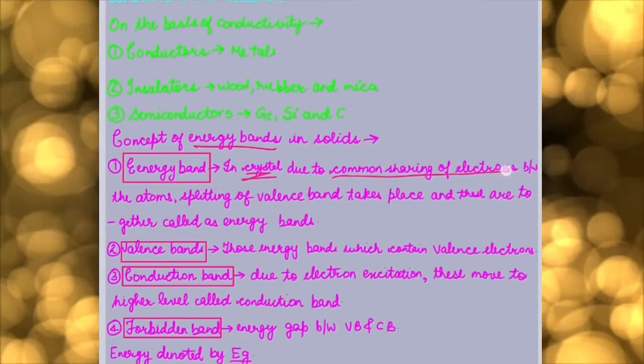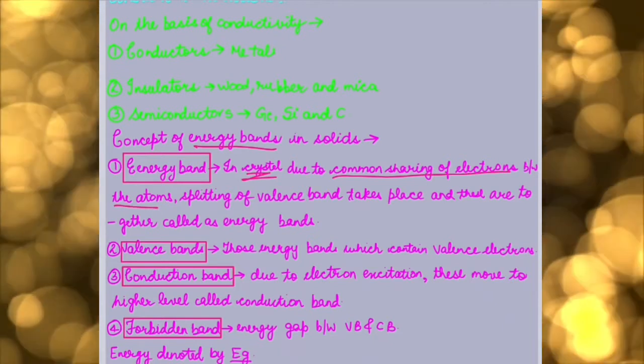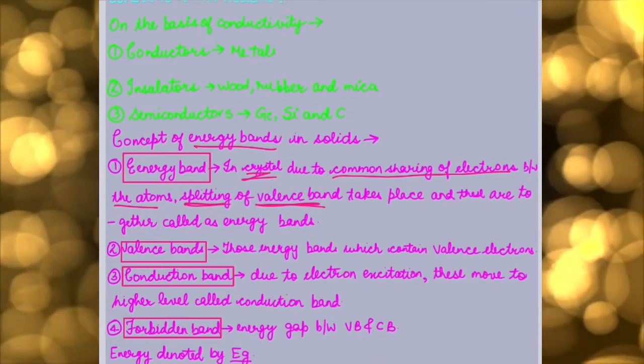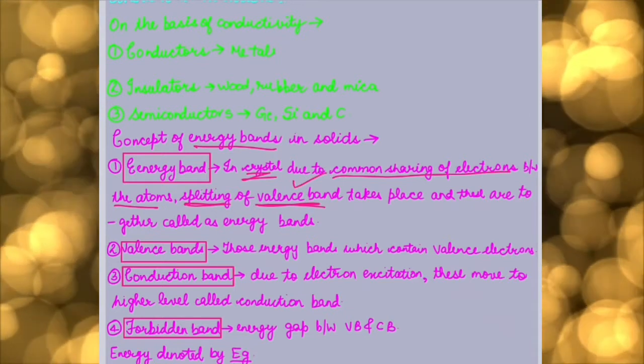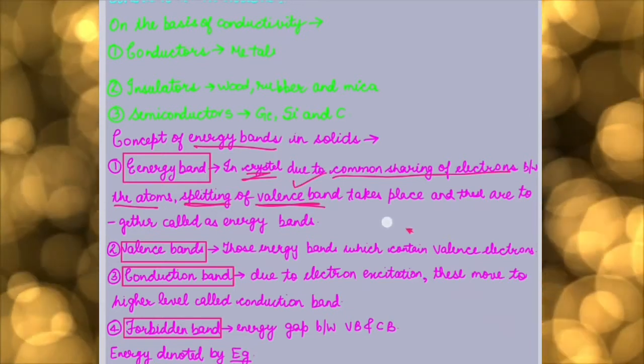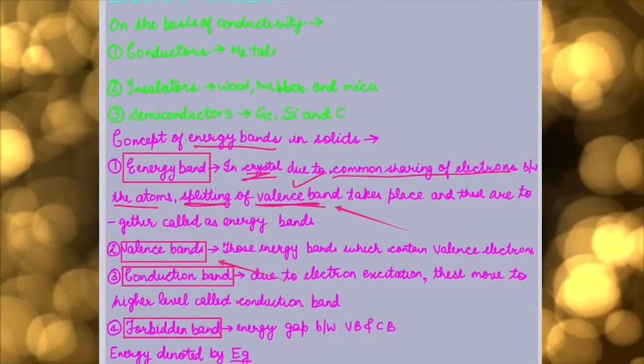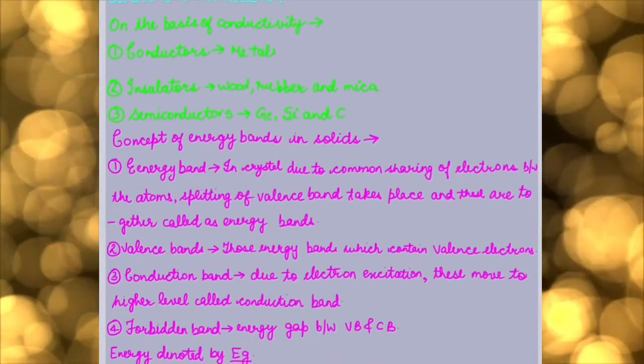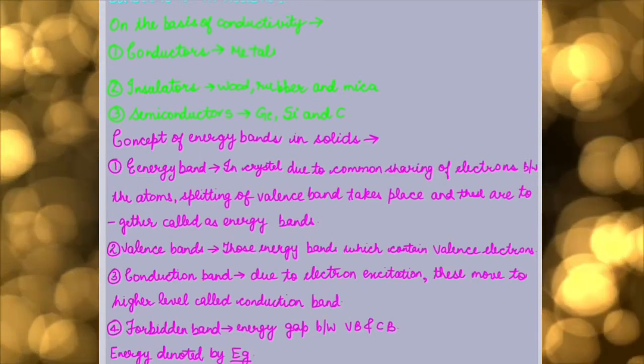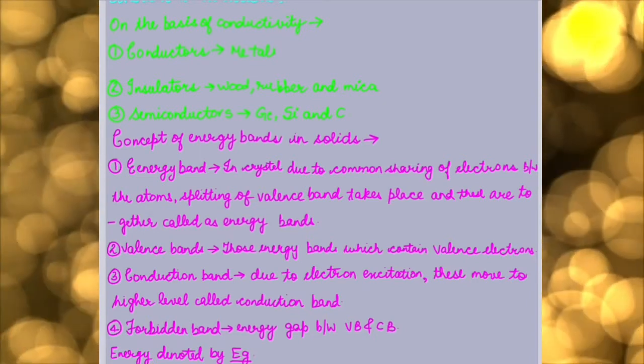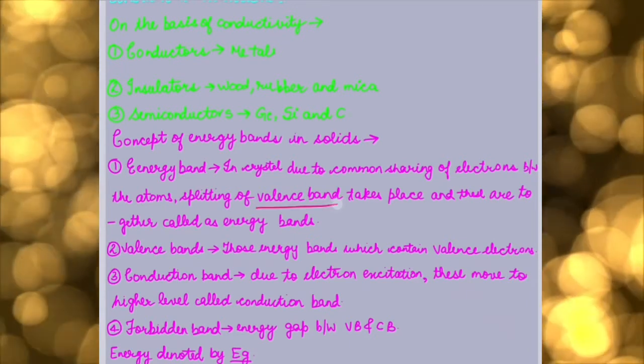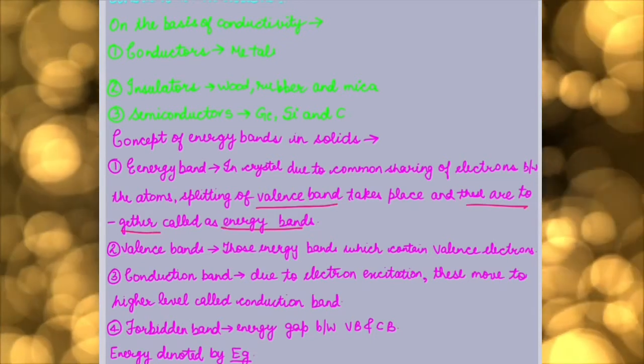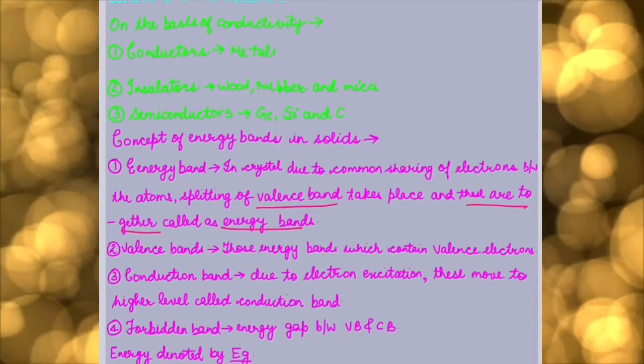These electrons shared are between the atoms. Because of this common sharing of electrons, we have the splitting of the valence band or we can say the energy band. Because of splitting of these energy bands, please note that this valence band and this valence band are not similar. So because of this splitting of the valence band, in which the electrons are present, we have a common valence band now for all the atoms. The splitting of valence band will take place and these act together. These are all common and now these are called as energy bands.